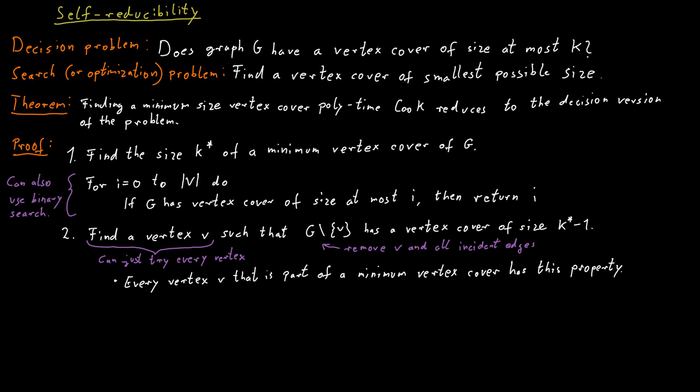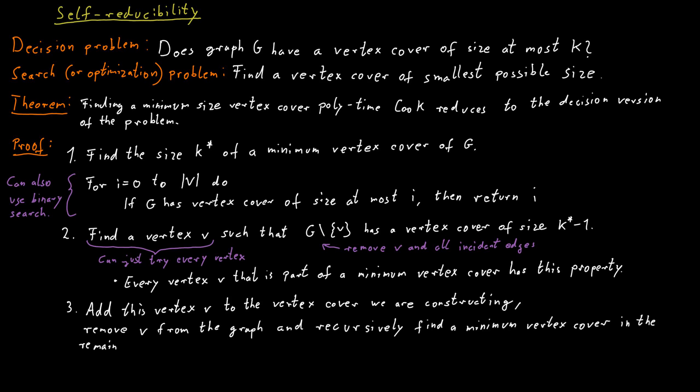So we find such a vertex v that has this property. We know it has to exist. And then we include it in our vertex cover, we remove it from the graph, and then we repeat the procedure on the remainder of the graph. So one by one, we identify vertices that should be included in our vertex cover. And we do this until we find all k star vertices that we need.